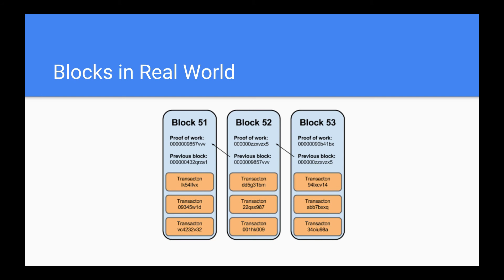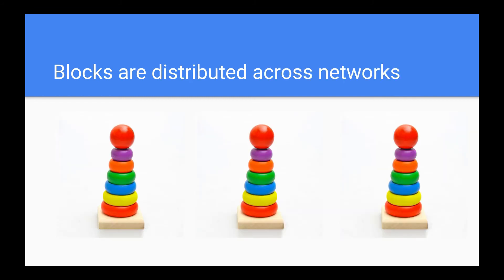Now even if someone manages to change a block and add some incorrect information in that then what? Well this is where the concept of distributed ledger comes in. Each of the blockchain stack or ledger is distributed across the nodes all over the world. If anyone tries to change any block in any one of the ledger it would immediately be visible to all the other ledgers because it would not match with the other ledgers and the fraudulent data would never come into the blockchain database. This is how the blockchain technology works.